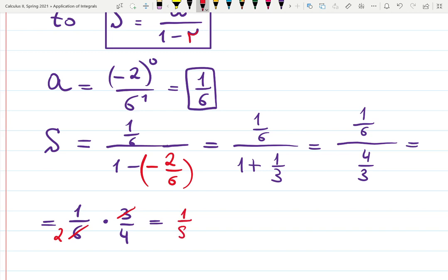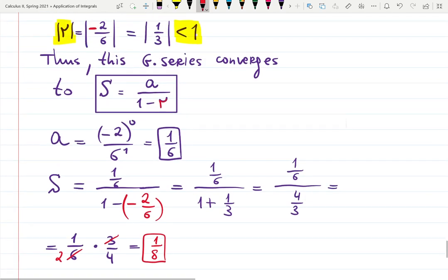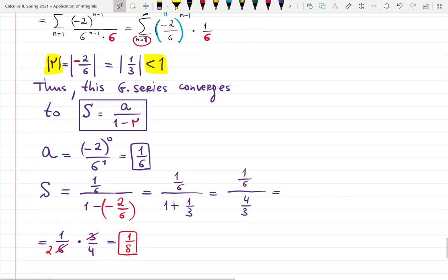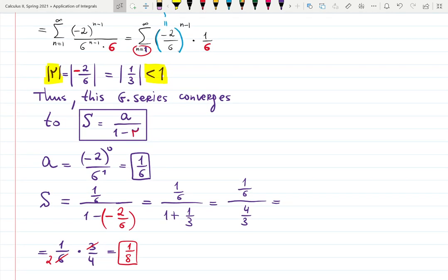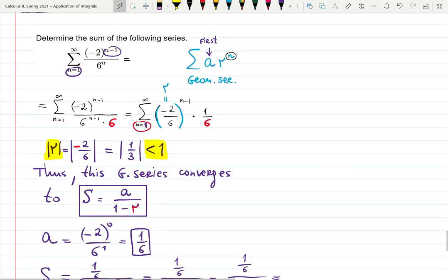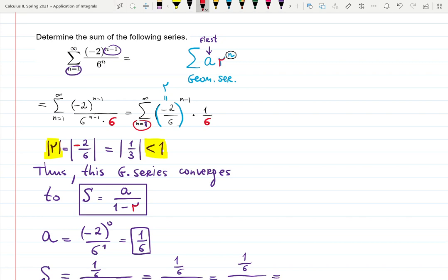That means that this geometric series converges because the common factor or common ratio, which is in the formula over here, this is my common ratio, is less than one by absolute value.